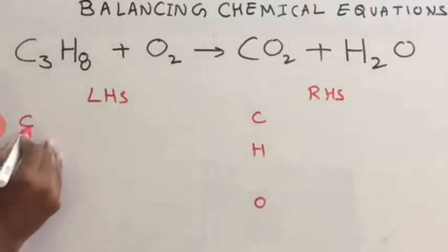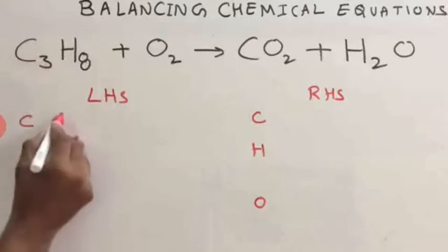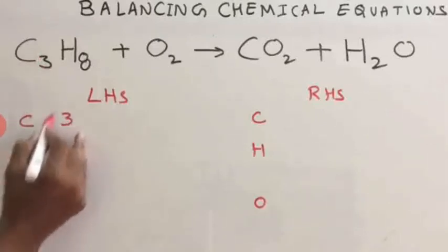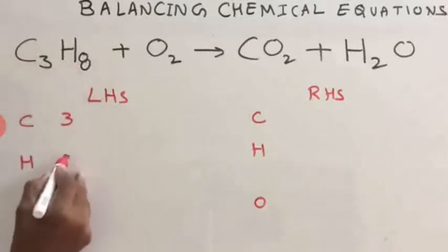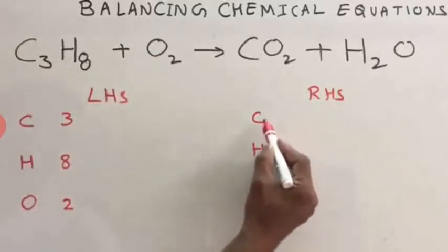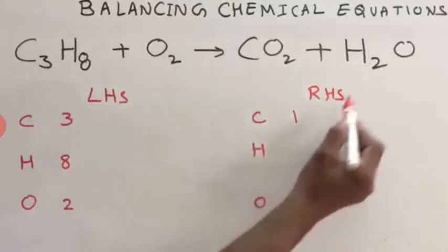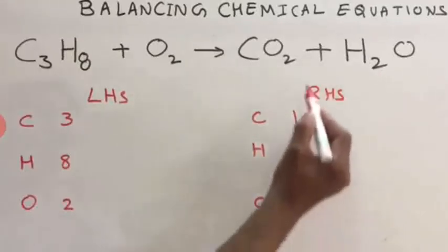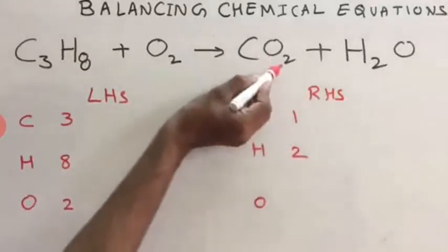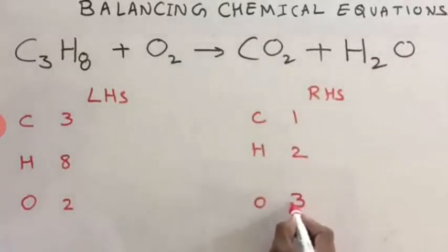How many atoms are there for carbon? C3 — that means 3 carbon atoms are there, so write 3. You have 8 hydrogen atoms and 2 oxygen atoms on LHS. Now check on RHS. On RHS you have 1 carbon atom, 2 hydrogen atoms, and oxygen: 2 here and 1 here, that means total 3 oxygen atoms.